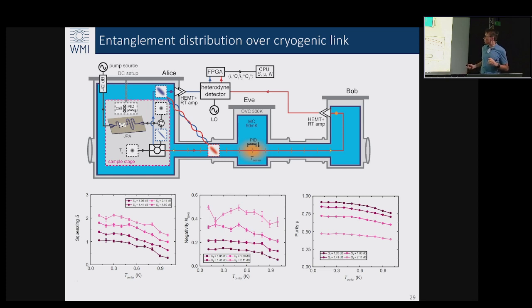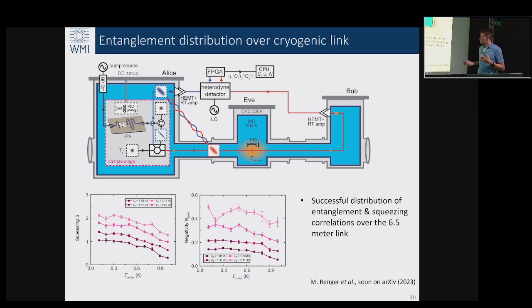What we know very well is that if you actually add to any EPR state more than one noise photon or sometimes half, you have the effect of sudden death of entanglement which kills entanglement. However, in this case we don't directly observe this effect.